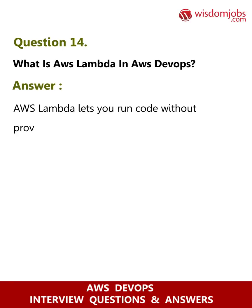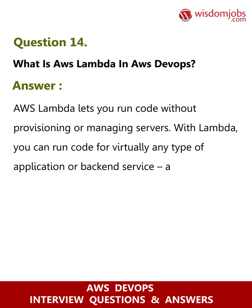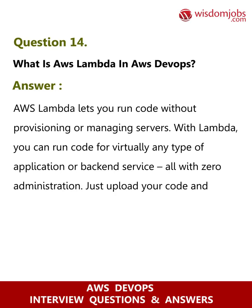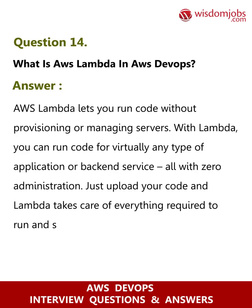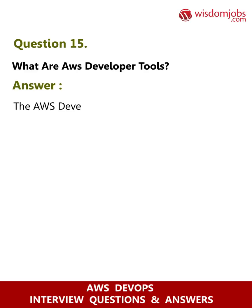Question 14: What is AWS Lambda in AWS DevOps? Answer: AWS Lambda lets you run code without provisioning or managing servers. With Lambda, you can run code for virtually any type of application or back-end service, all with zero administration. Just upload your code and Lambda takes care of everything required to run and scale your code with high availability.